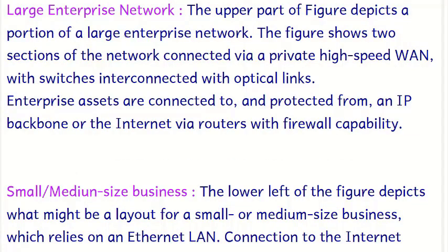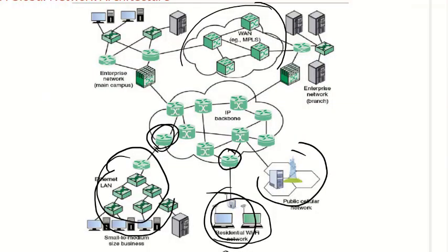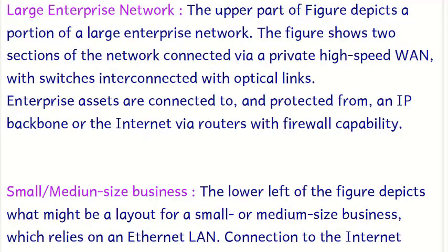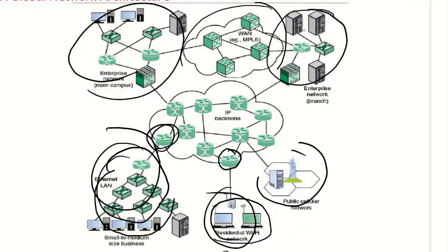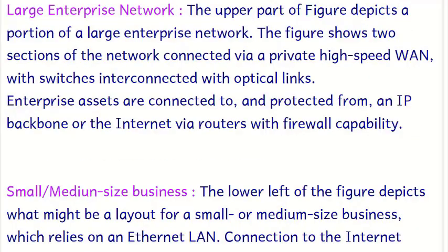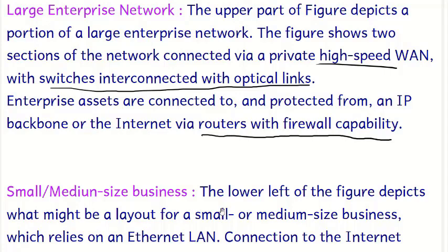Looking at the large enterprise network — depicted in the upper-left portion of the diagram — we can see two sections of the network. These may belong to the same organization but are at different locations, connected through a high-speed WAN with switches interconnected by optical links. Enterprise assets are also protected from the IP backbone or internet using routers with firewall capability.